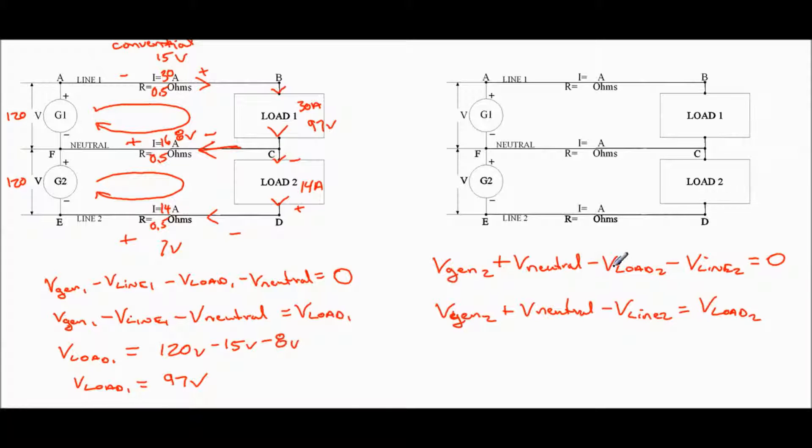So we have 120 volts plus the voltage at the neutral, which is 8 volts, subtract the voltage at line 2, which is 7 volts. And that will equal V load 2. So V load 2 is going to equal 121 volts.